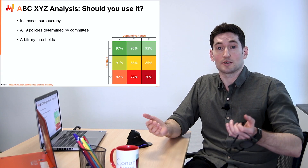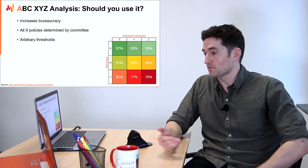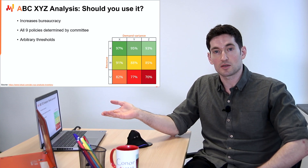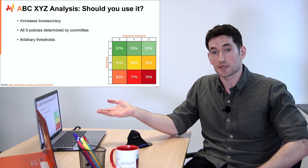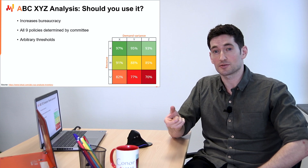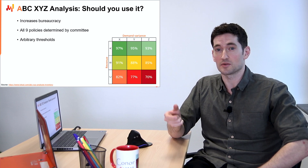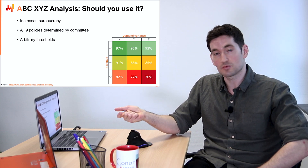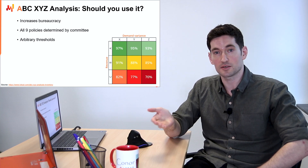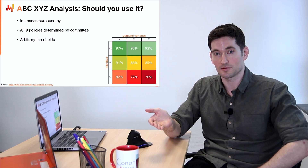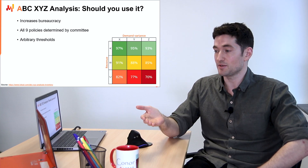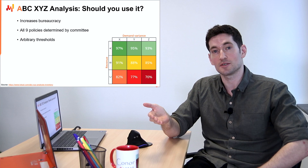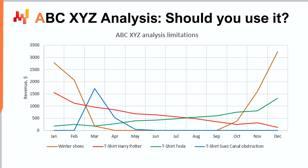So should you use it? Management has to decide separate policies for each of the nine categories, and that increased bureaucracy is only one of the problems. Let's not forget that the thresholds between these categories are entirely the product of committee. Furthermore, ABC XYZ misses key demand patterns, including seasonality and rising versus falling trends.